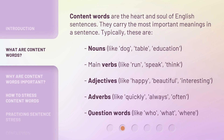Content words are the heart and soul of English sentences. They carry the most important meanings in a sentence. Typically, these are nouns like dog, table, education, and main verbs like run, speak, think.